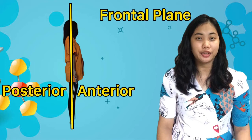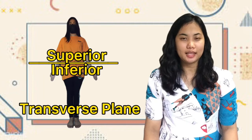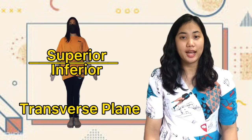Next, we have the frontal plane. It is a sideways cut that divides the body into anterior and posterior sides. Next, we have the transverse plane. It is a horizontal cut that divides the body into two — the superior and inferior portions.